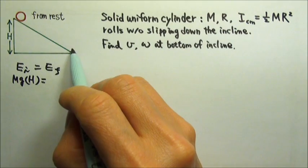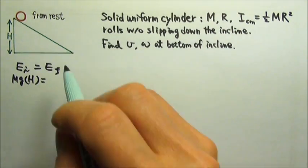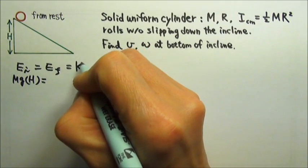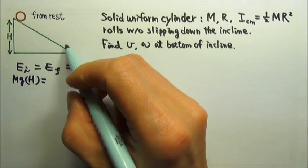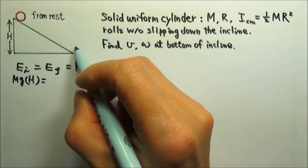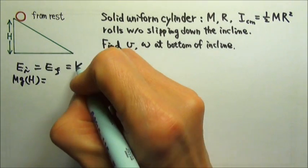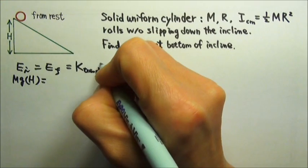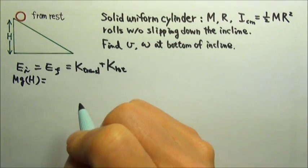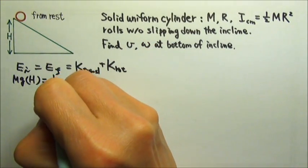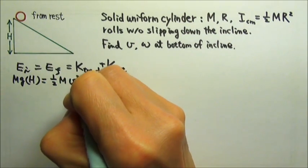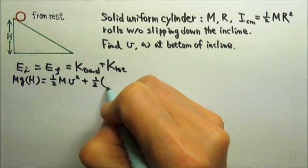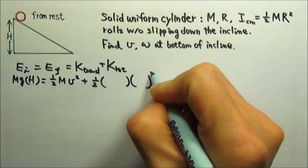At the bottom of the incline, the cylinder will be moving. So there is a kinetic energy at the end. And because the cylinder is going to do both translational motion and the rotational motion, so there are two kinds of kinetic energy, the translational kinetic energy and the rotational kinetic energy. So we have 1/2 mv².